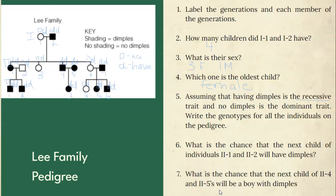Anyone with a big letter does not have dimples, and anyone that does have dimples has two little letters. Question six asks: what is the chance that the next child of individuals 2-1 and 2-2 will have dimples? I can create a Punnett square using their genotypes and make a prediction. Filling in the Punnett square: two results show no dimples, and two results show dimples. So the probability of that child having dimples is 50%.